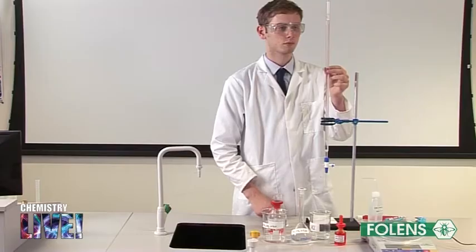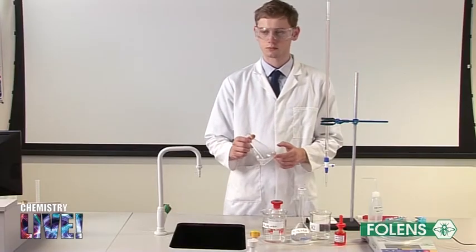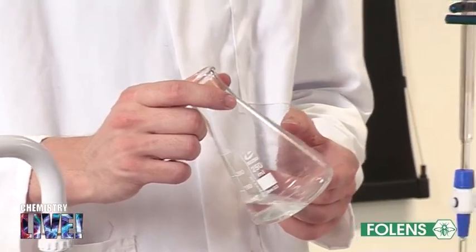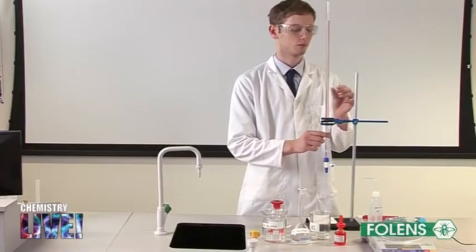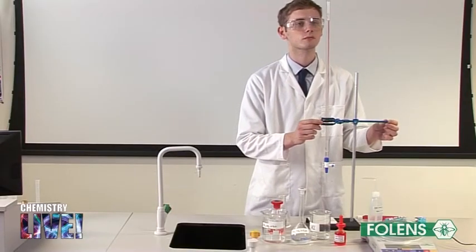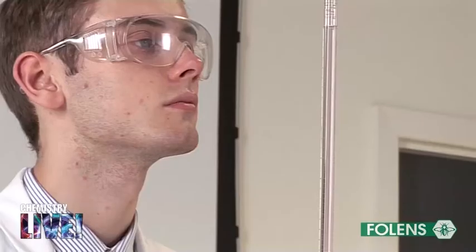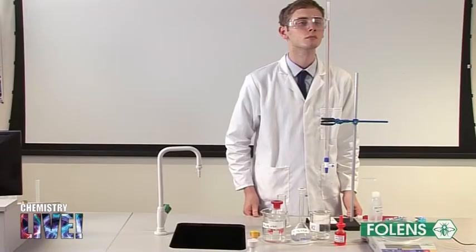25 centimeters cubed of the sodium carbonate solution has been pipetted into a conical flask. The burette is clamped vertically using the retort stand and filled to the mark with the hydrochloric acid solution. The funnel has been removed from the burette and the part of the burette below the tap has been filled. The bottom of the meniscus has been adjusted to the zero graduation mark.